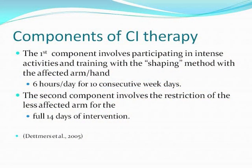The first component involves the motor activation of the more affected arm and hand by participating in intense activities and training with the shaping method 6 hours a day for 10 consecutive weekdays. The second component involves the restriction of the less affected arm for the full 14 days of intervention.